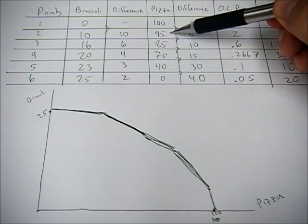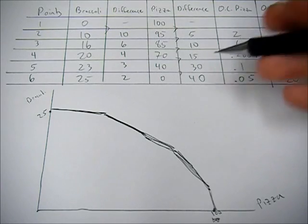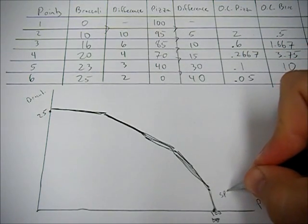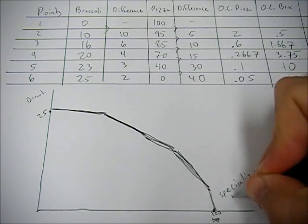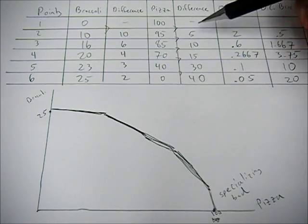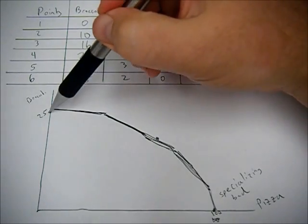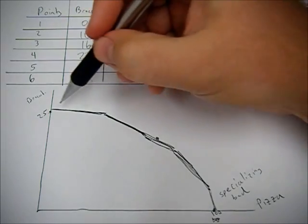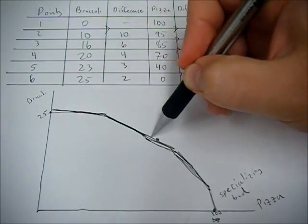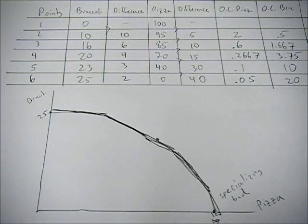And so you can see that when we have opportunity costs that increase as we specialize more in the good, as you can see here as we produce more and more pizza, the opportunity cost for pizza goes up. So that's telling us that specializing is bad, but as we get towards the middle, a combination of goods, the opportunity costs are a little lower. So when we have this bowed out nature of the PPF, that's telling us that we shouldn't really specialize, we should use combinations of the goods.